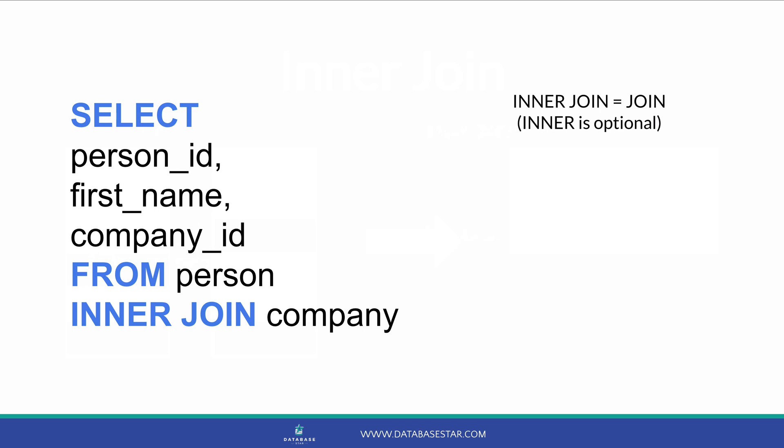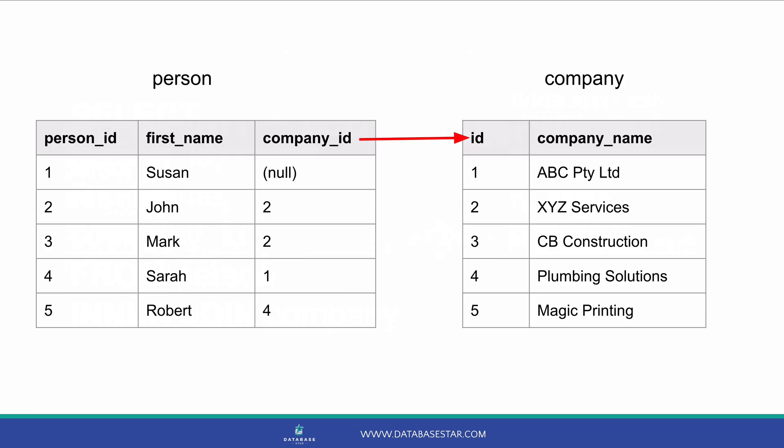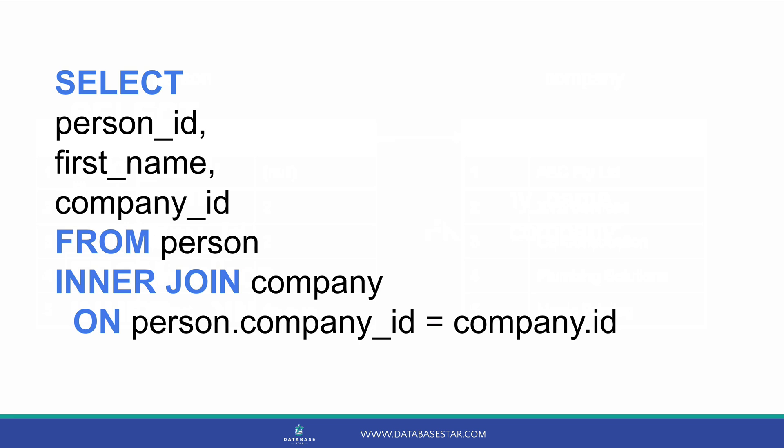After the inner join, we have our second table — we write company. We then have to specify how the two records are related. What fields in our tables show us that a person is related to a company? Looking at our tables, we can see that company ID is in both the person table and the company table. This is the field that relates the two tables. You can identify this in databases by the presence of a foreign key, which defines how one table is related to another. So we specify the on keyword, then person.companyID equals company.id.